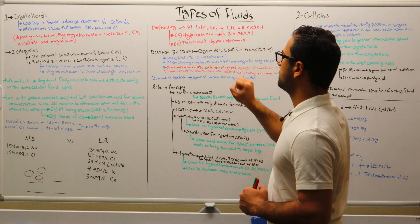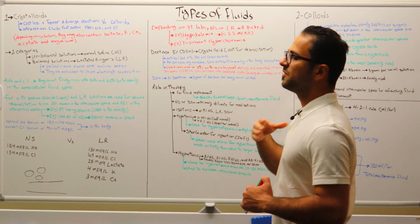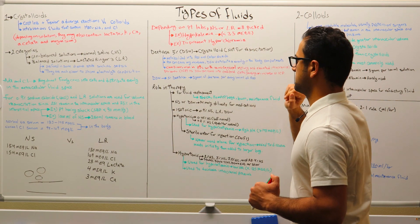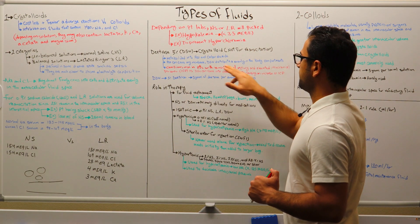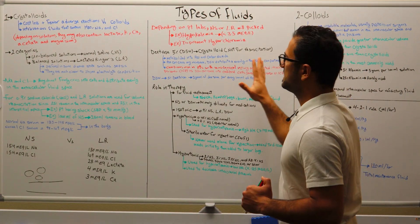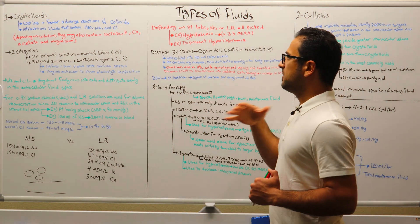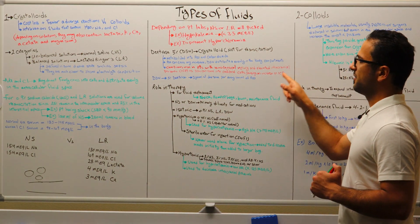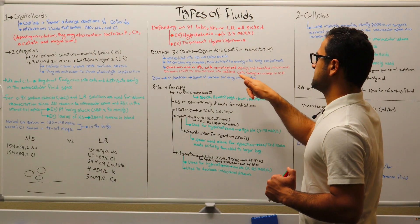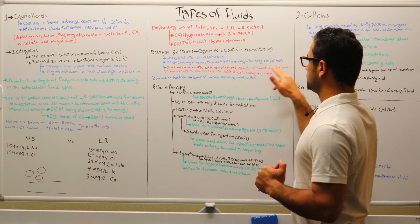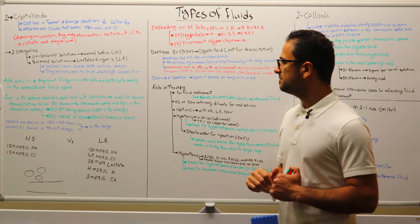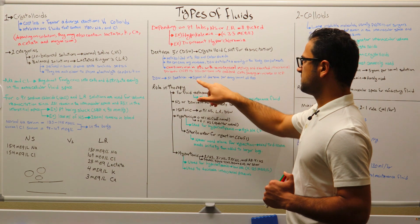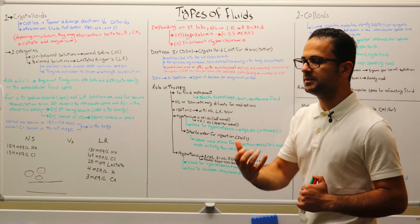Moving to the second part of crystalloids — those not used for volume resuscitation — and that is dextrose in water. Dextrose in water is metabolized into water and carbon dioxide. Water can cross any membrane, so D5W distributes evenly in the body compartments, which makes it different from the first part. One needs to be cautious when using dextrose in water because in patients with neurological injury and elevated intracranial pressure, D5W can cross into the cerebral cells causing an increase in intracranial pressure, which can lead to more issues. D5W is 5% dextrose, which is 5 grams of dextrose per every 100 milliliter of water.